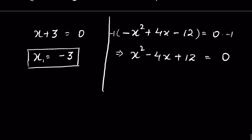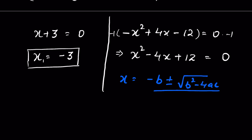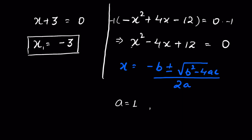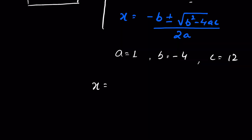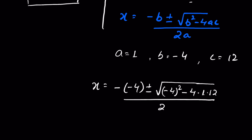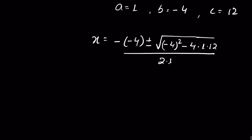Using the discriminant method, x = [−b ± √(b² − 4ac)] / 2a, where a = 1, b = −4, and c = 12. So x = [−(−4) ± √((−4)² − 4×1×12)] / (2×1), which is x = [4 ± √(16 − 48)] / 2.